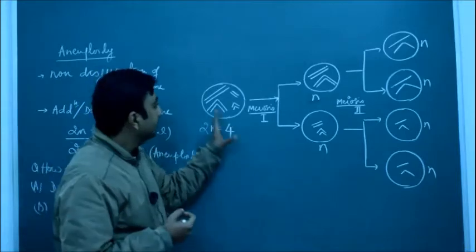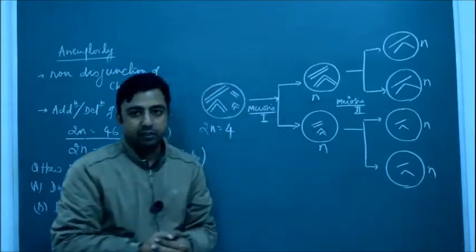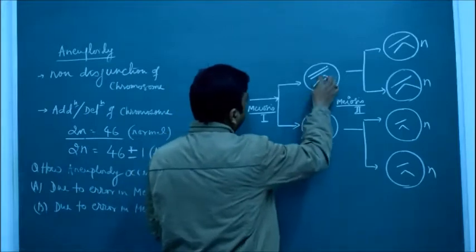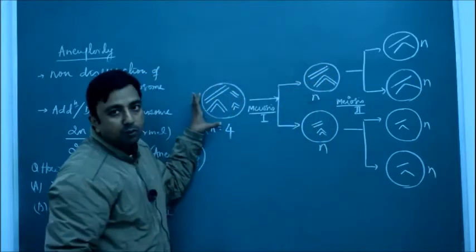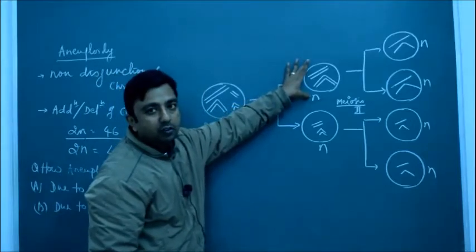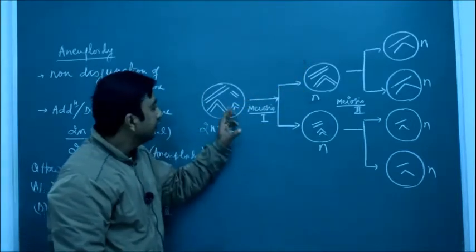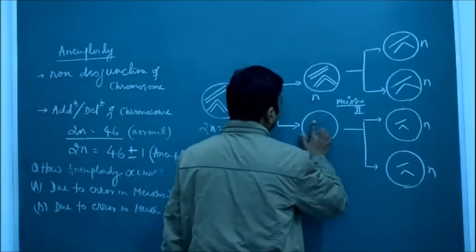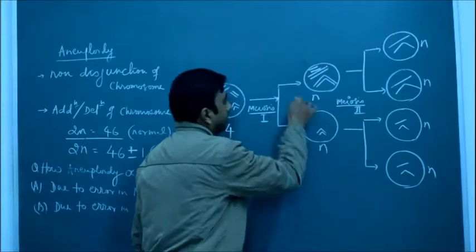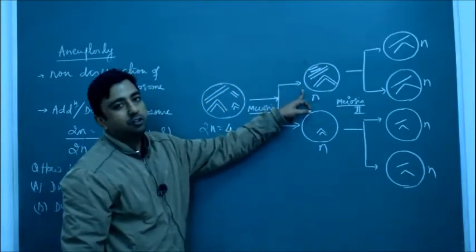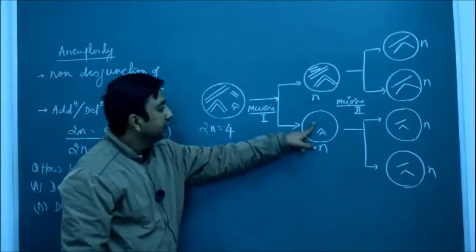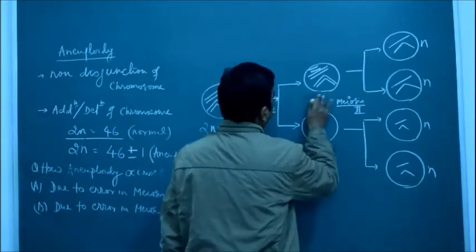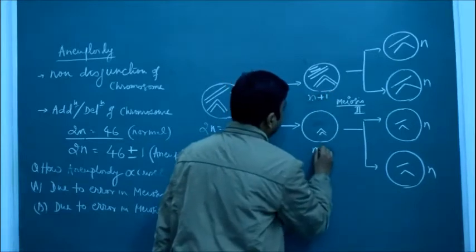An error means there is an unequal division of chromosomes — the separation of chromosomes is unequal. Normally, two pairs of chromosomes go to each daughter nucleus. But if there is an error in meiosis 1, three pairs go to one daughter nucleus and only one pair goes to the other. So we can call these n plus 1 and n minus 1.